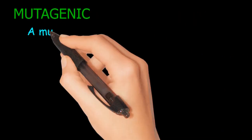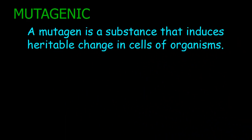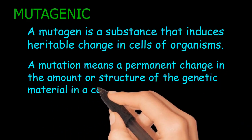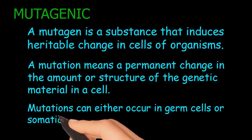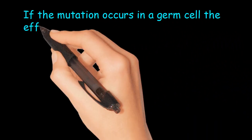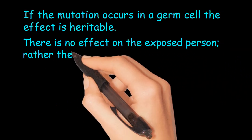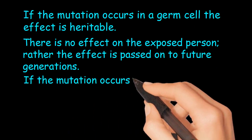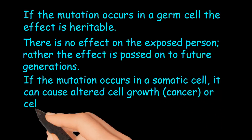Mutagenic: A mutagen is a substance that induces heritable change in cells of organisms. A mutation means a permanent change in the amount or structure of the genetic material in a cell. Mutations can occur in germ cells or somatic cells. If the mutation occurs in a germ cell, the effect is heritable — there is no effect on the exposed person, but the effect is passed on to future generations. If the mutation occurs in a somatic cell, it can cause altered cell growth, cancer, or cell death.